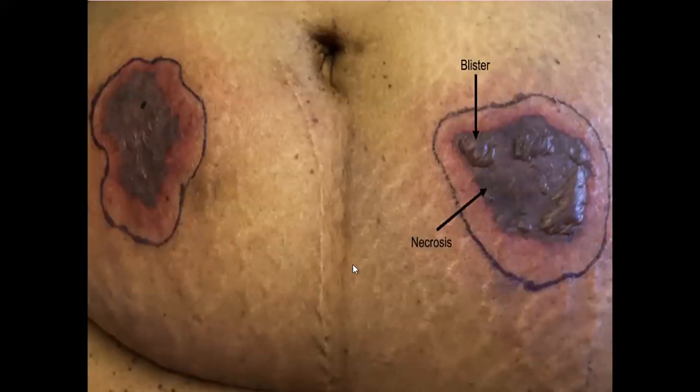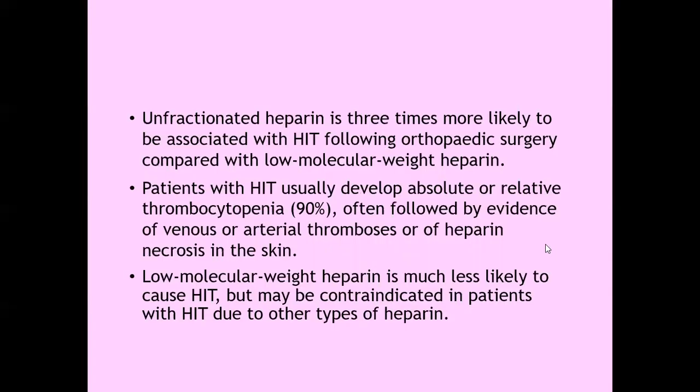These antibodies bound to heparin on the platelets result in platelet coagulum. The end result of heparin necrosis is blisters, necrosis, and surrounding erythema. Unfractionated heparin is three times more likely to be associated with HIT following orthopedic surgery compared with low molecular weight heparin. Patients with HIT usually develop absolute or relative thrombocytopenia, often followed by evidence of venous or arterial thrombosis or of heparin necrosis on the skin.